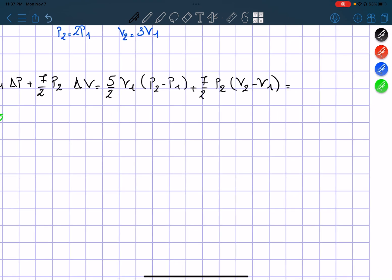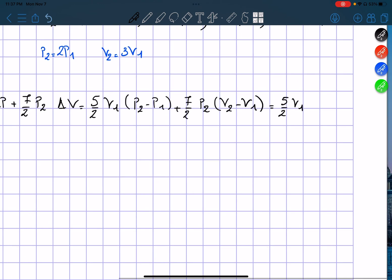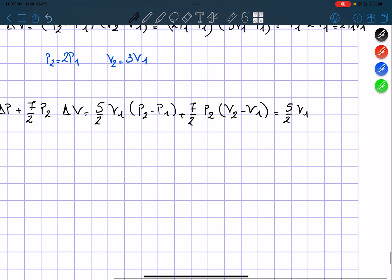And so we get 5 over 2 times V1, the change in P is equal to P1 plus 7 over 2 P2. The change here is equal to 2V1.